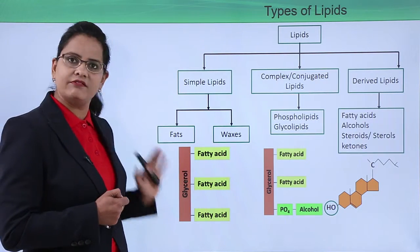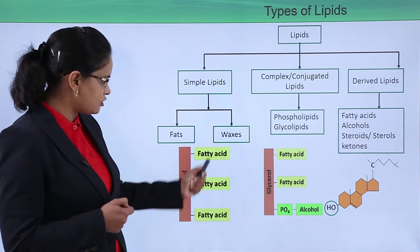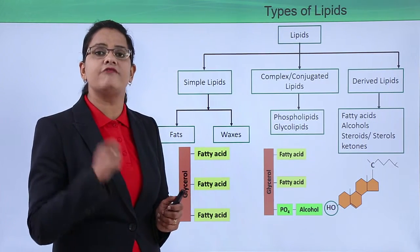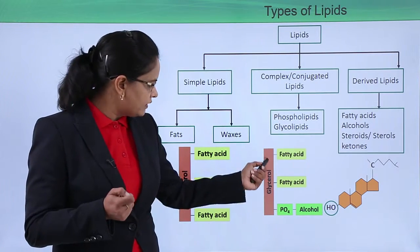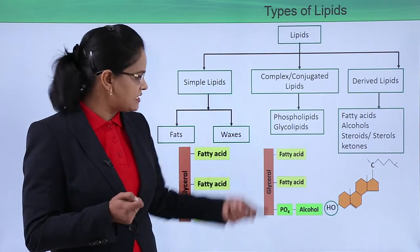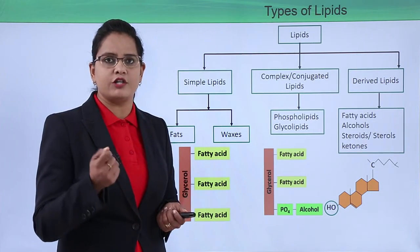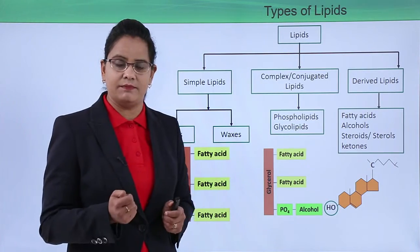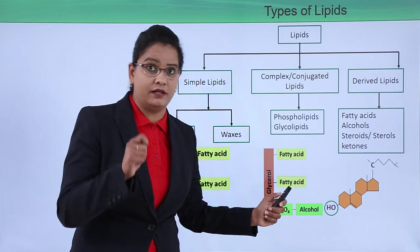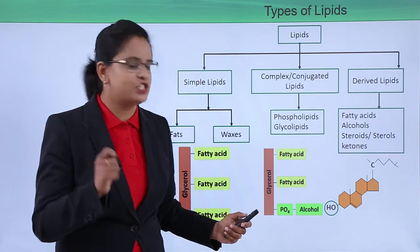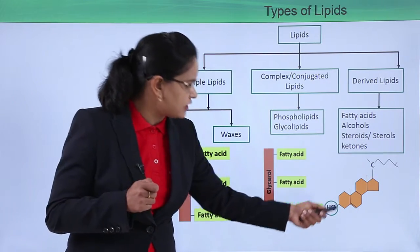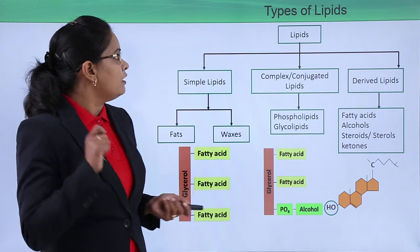The structure of a simple lipid consists of one glycerol and three fatty acids — this basic skeleton remains the same. Complex lipids have an additional molecule or element apart from glycerol and fatty acids; for example, a phosphate group and an alcohol group are attached, as seen in phospholipids. Derived lipids must have a hydrocarbon ring and also a long fatty acid chain.